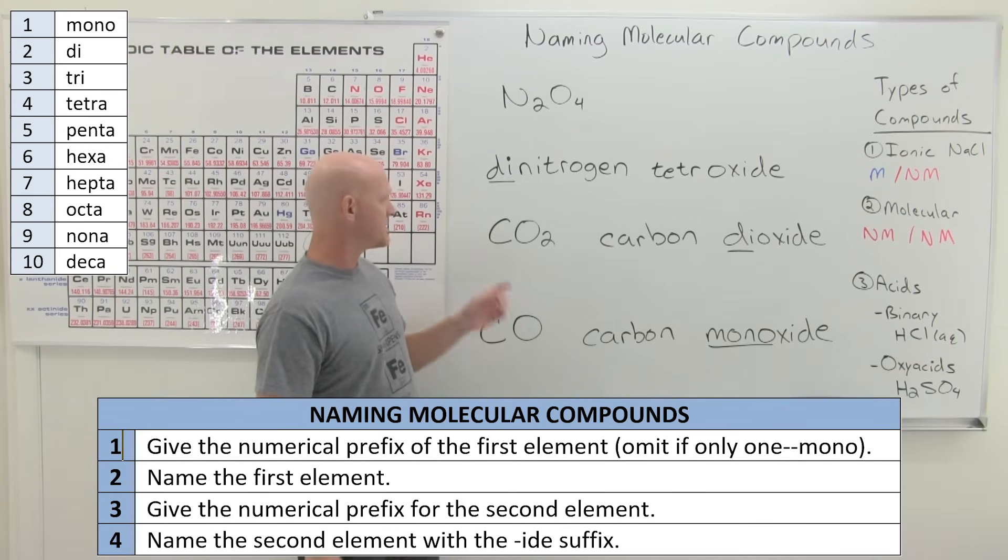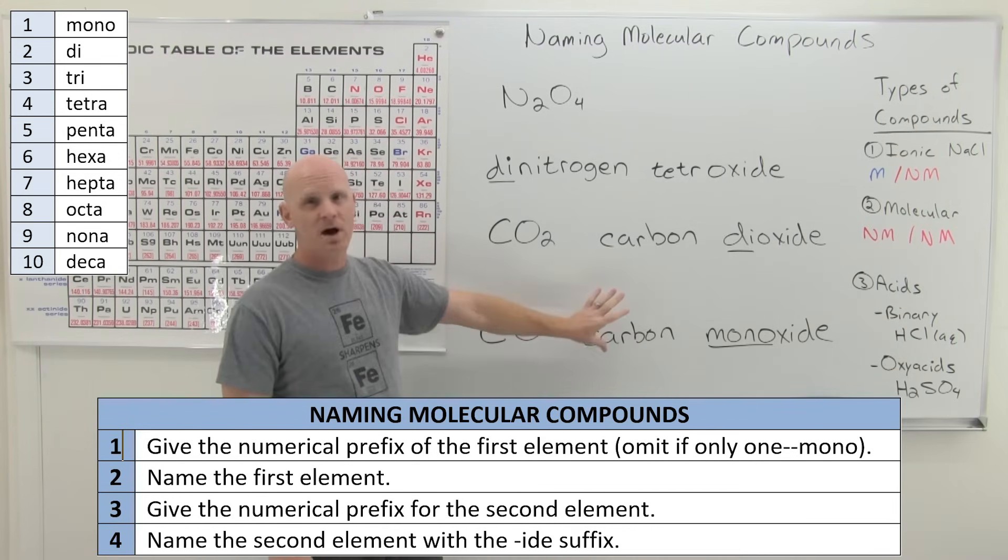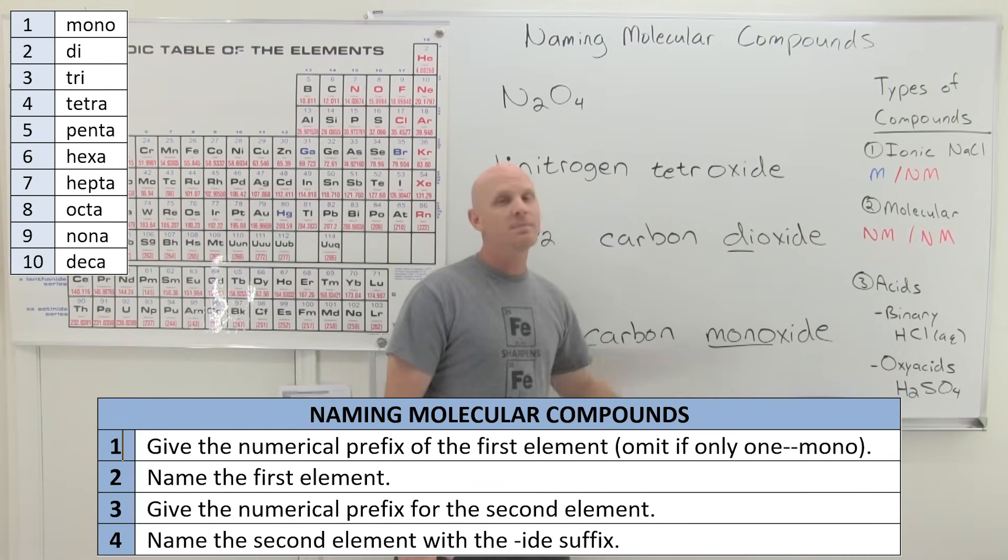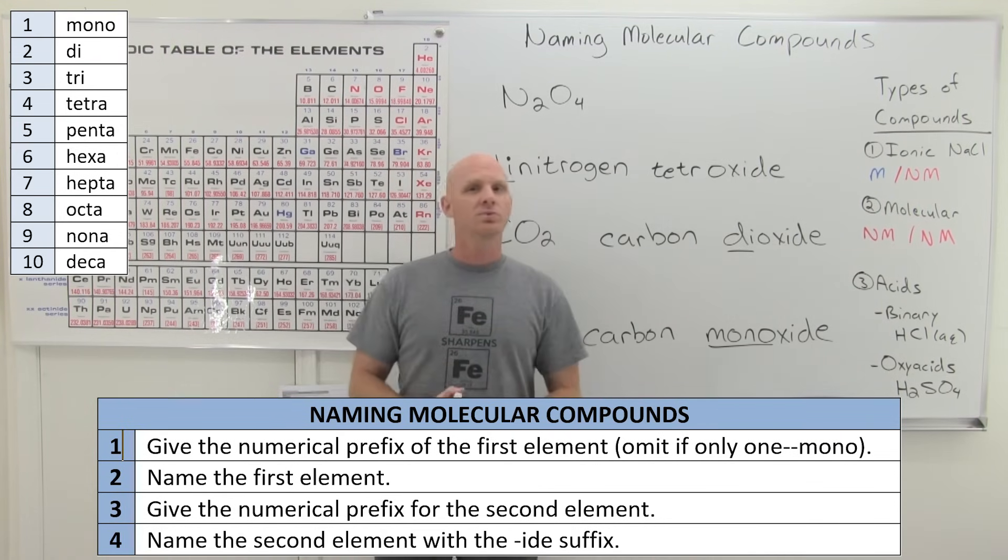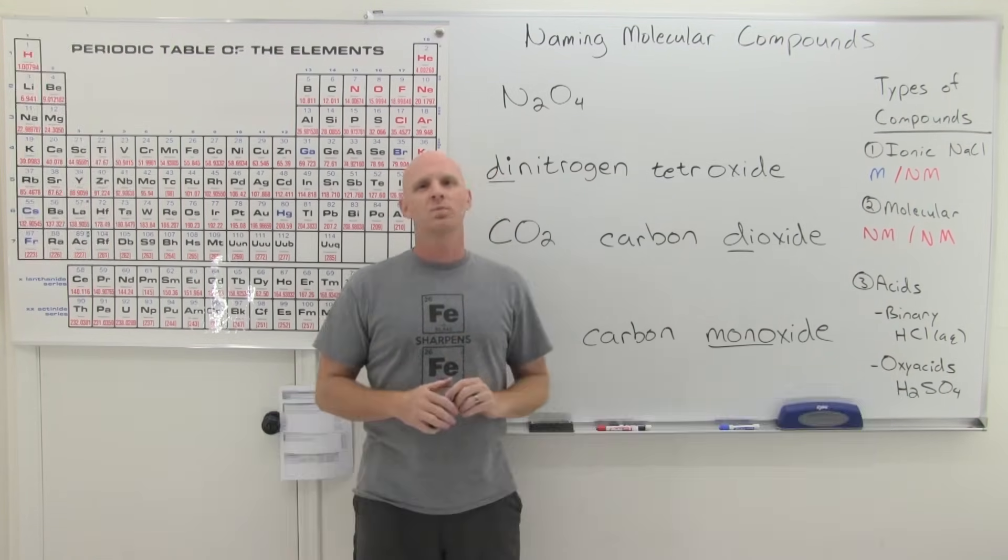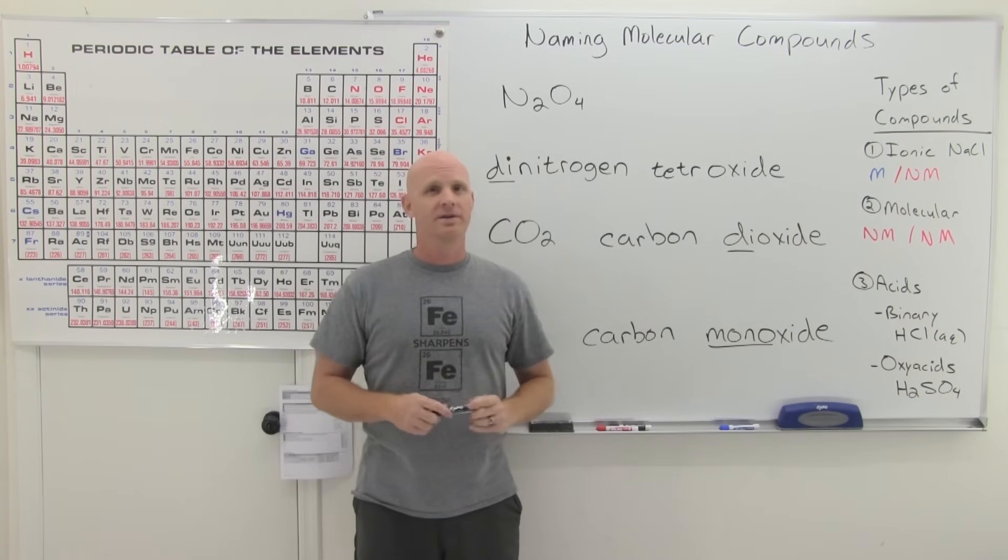So if you just stick with the rules where if there's only one of the first element, leave off the mono. But if there's only one of the second element, still include the mono. That should serve you well. I just wanted to make a quick point that it's not the real complete set of rules that maybe you encounter somewhere down the road, probably far beyond this class.